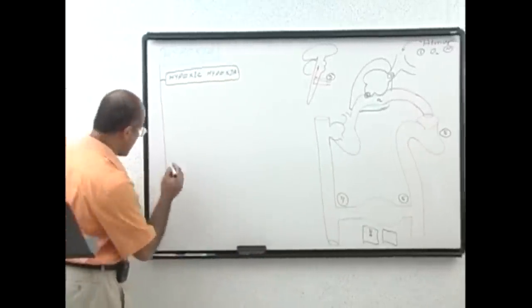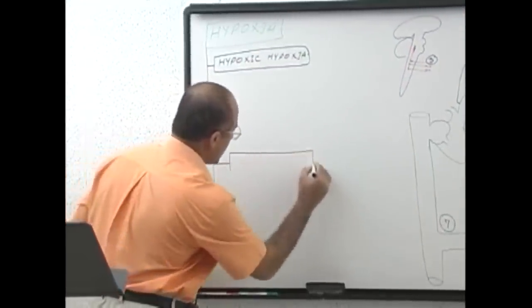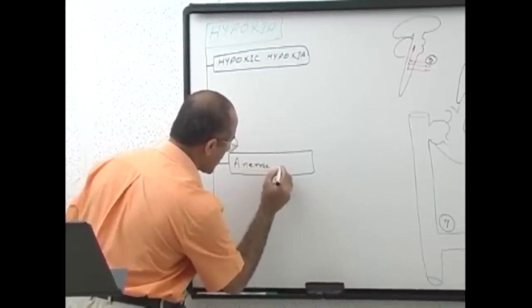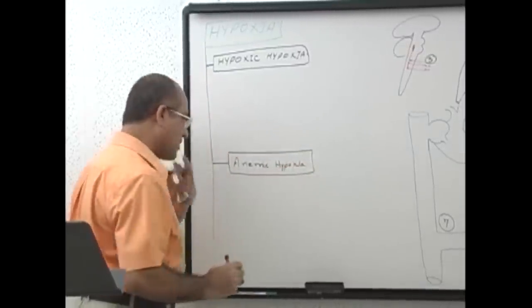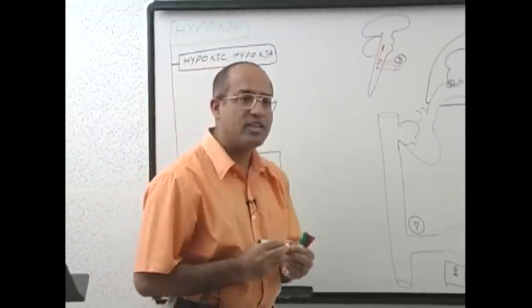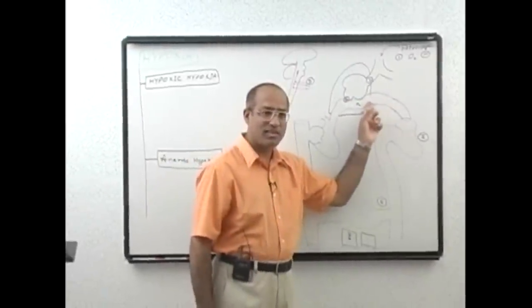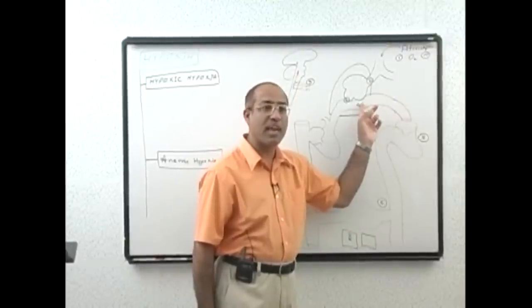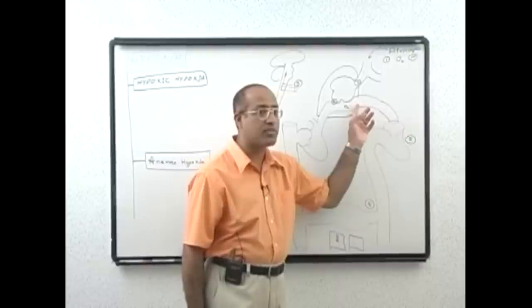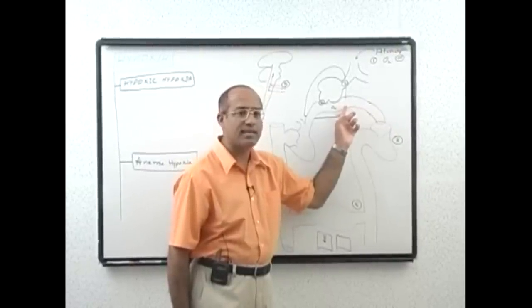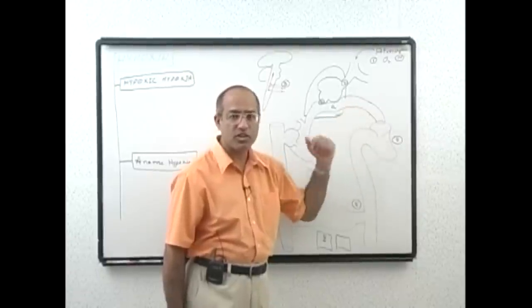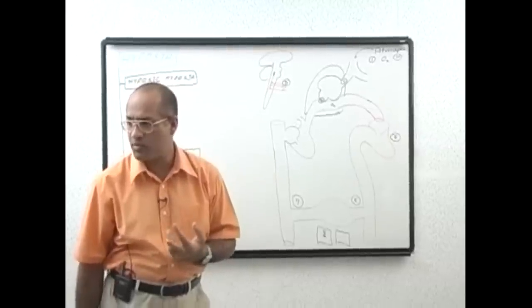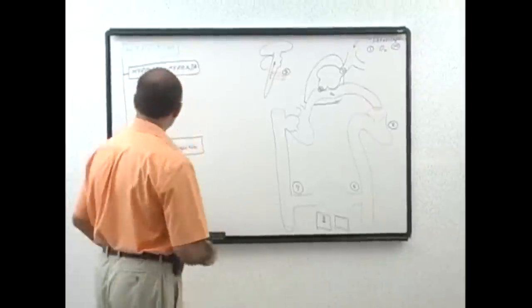The next type is anemic hypoxia. Anemic hypoxia is hypoxia in which either the hemoglobin level is low, or the hemoglobin is dysfunctional. In carbon monoxide poisoning, total hemoglobin may be normal, but carbon monoxide makes a large percentage of hemoglobin dysfunctional — it cannot carry or release oxygen properly. When hemoglobin is either deficient or dysfunctional and cannot transport and deliver oxygen properly, we call it anemic hypoxia.